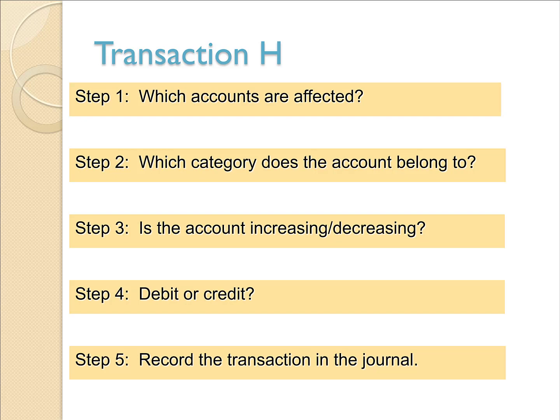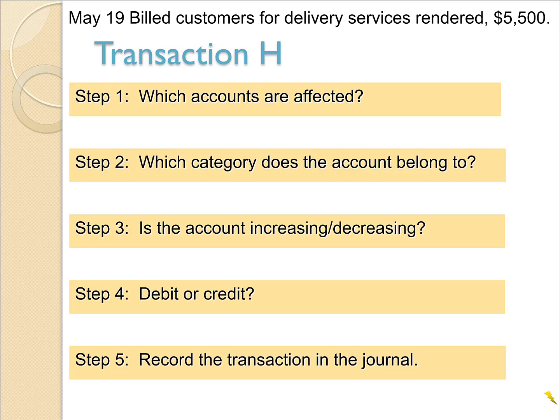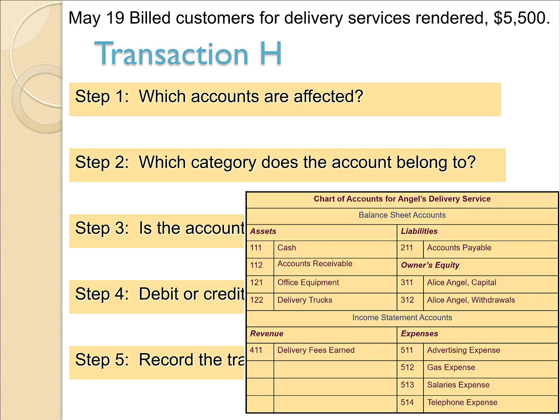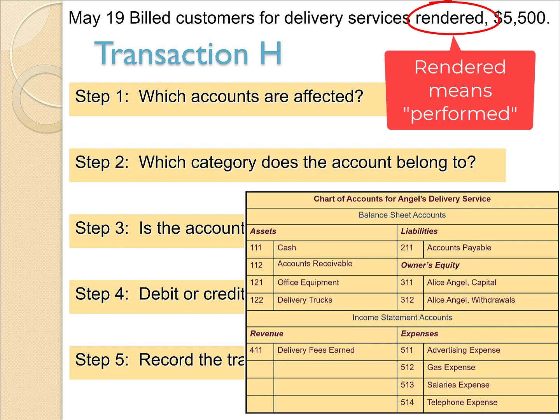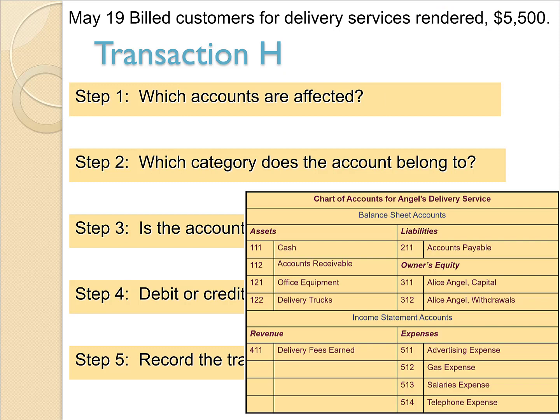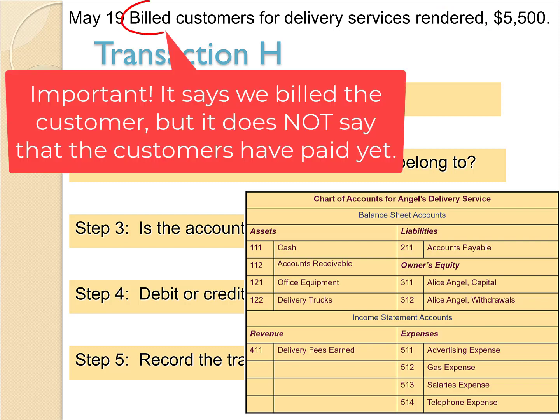Now we're ready for transaction H. On May 19th, the company billed customers for delivery services rendered — $5,500. Remember, rendered means performed. So the company performs some delivery services and billed the customers. Notice it says that they billed the customers; it does not say that the customer has paid yet.